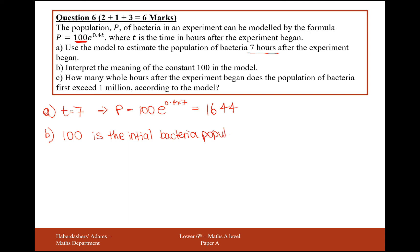So if I was to plug in T equals 0, so no time had elapsed before the experiment began, E to the 0 will give you 1, so 100 times 1 will give you 100. You can see there how when you set T equal to 0, you're going to get 100 out. So after no time has elapsed, that's why we get the word initial from before the experiment began.